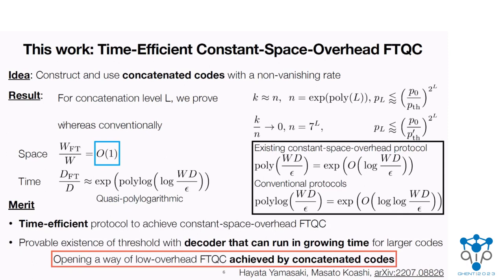We prove that the rate of logical qubits per physical qubits does not vanish in our protocol. We show that the physical error rate of our protocol can be suppressed in the same way as the conventional protocol for concatenated code. This leads to the fact that our protocol has a constant space overhead, and the time overhead is only quasi-polylogarithmic. This time overhead is significantly smaller than the polynomial time overhead of existing constant space overhead protocols, while slightly larger than the polylogarithmic time overhead of conventional protocols. Moreover, we proved that our protocol has a non-zero threshold even with decoders that can run in growing time for larger codes, and we proved all of these things using concatenated code rather than quantum LDPC codes.